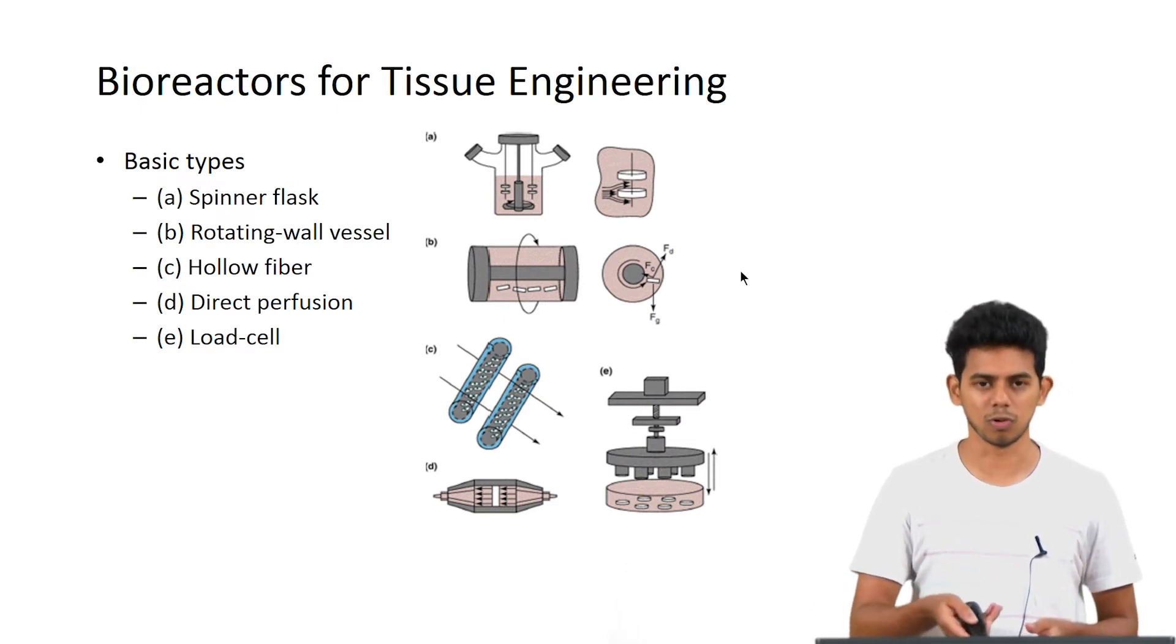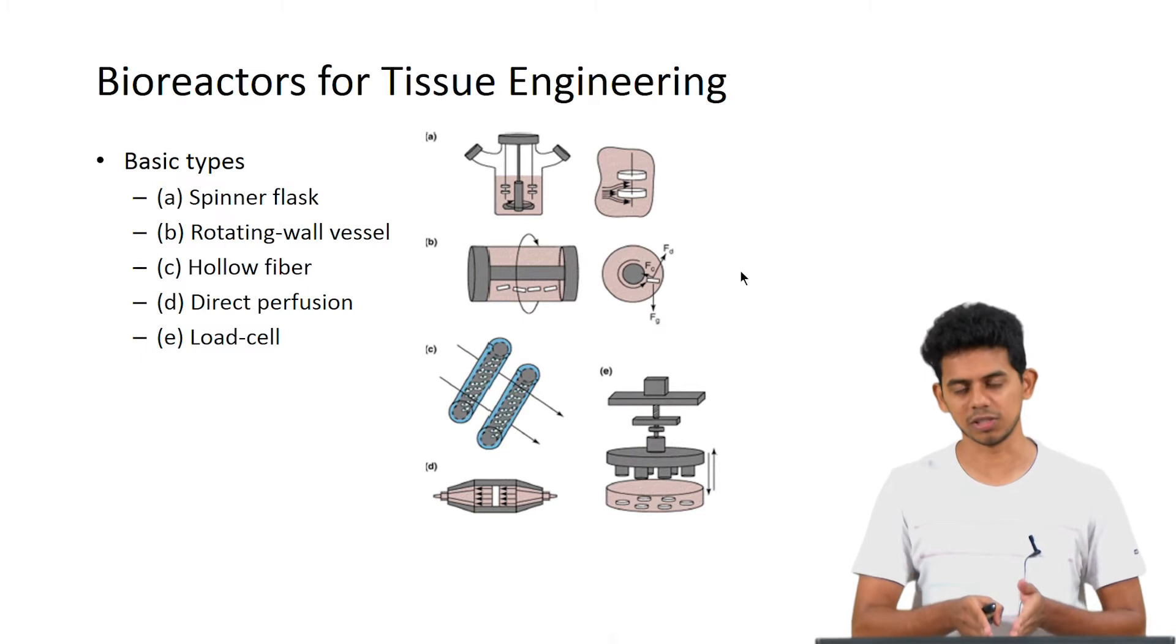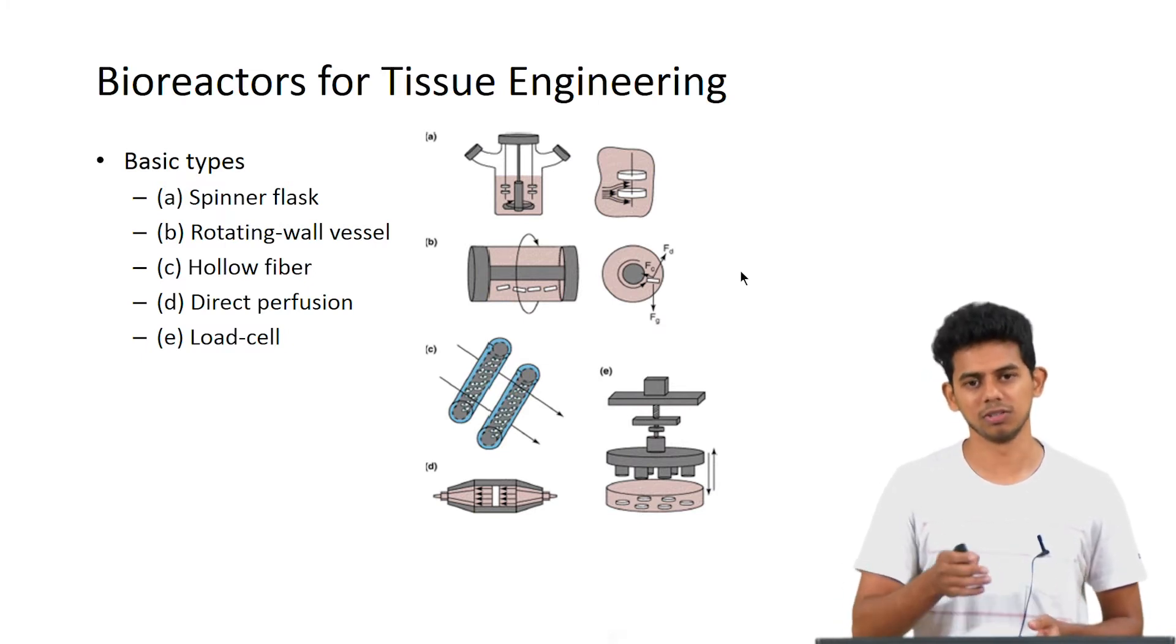Direct perfusion. Here what happens is a cell and scaffold construct is placed in the center of the chamber and the media is perfused through it, so that the spent media comes out on the other side and you can recirculate it or change the media.